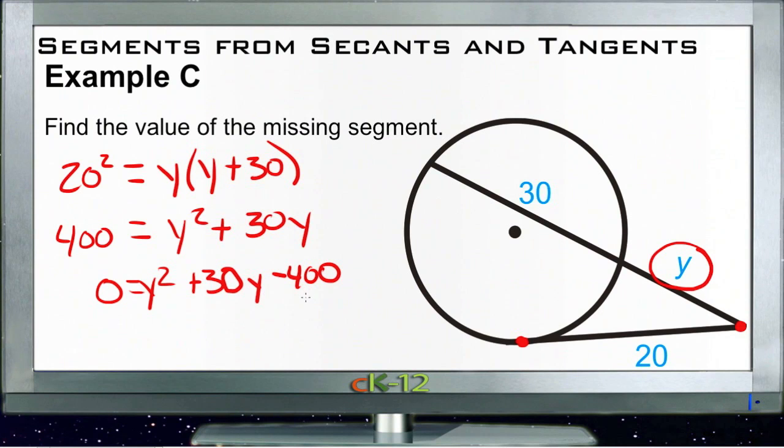And then we'll factor this. We have 400 could be 40 times 10. So if we had positive 40 times negative 10, that would multiply to be 400 and add to be 30. So that means we could factor this as y plus 40 times y minus 10.